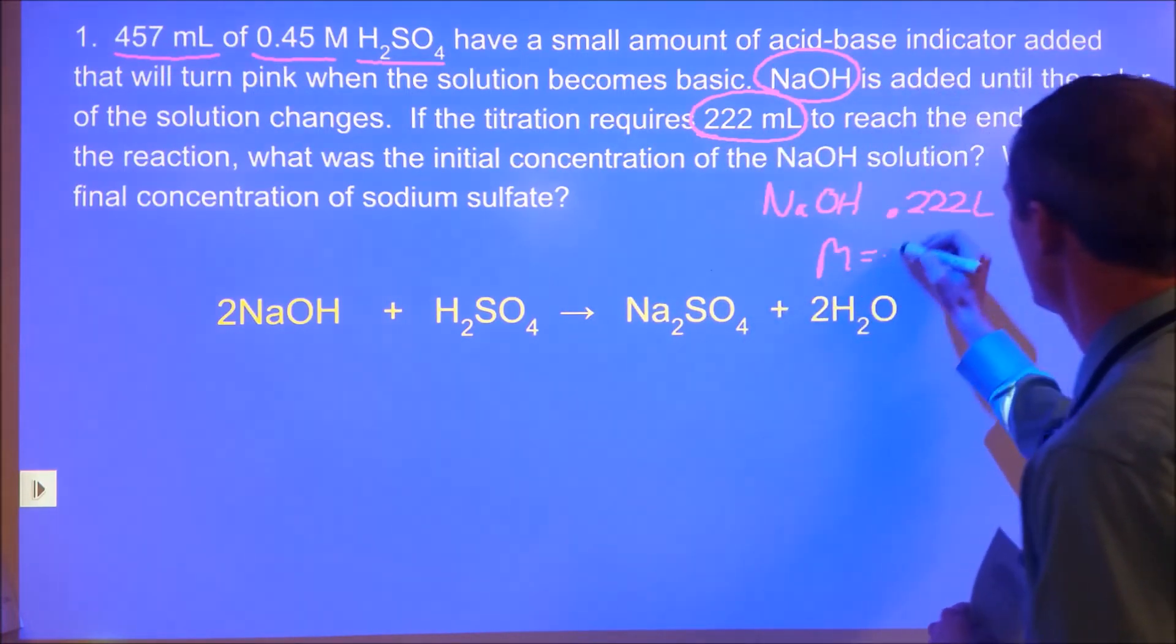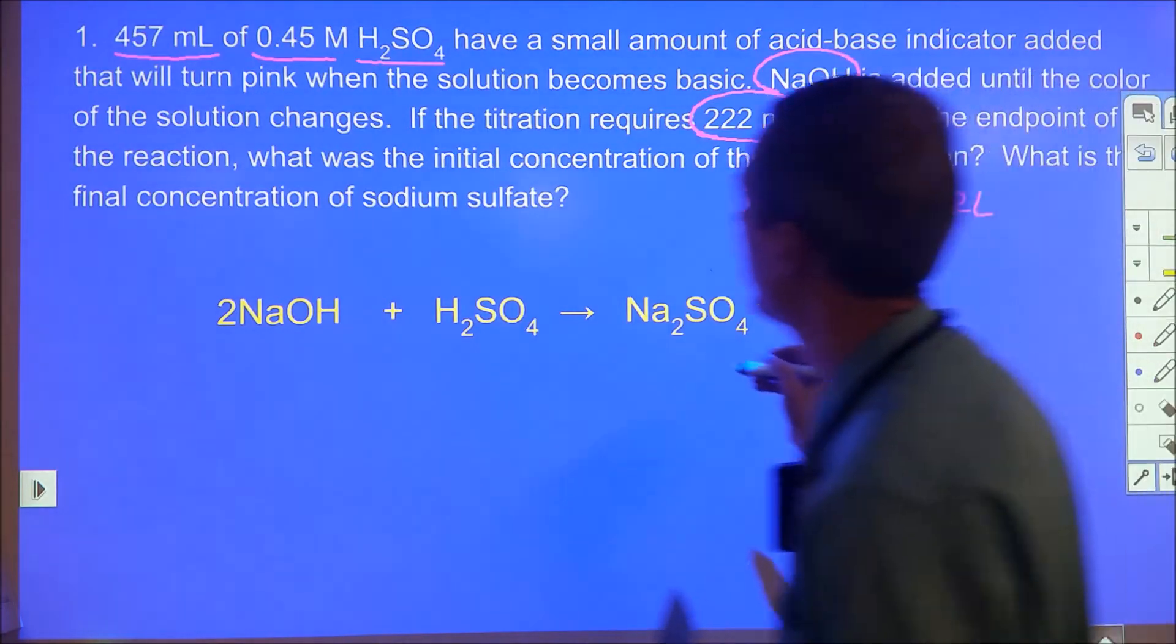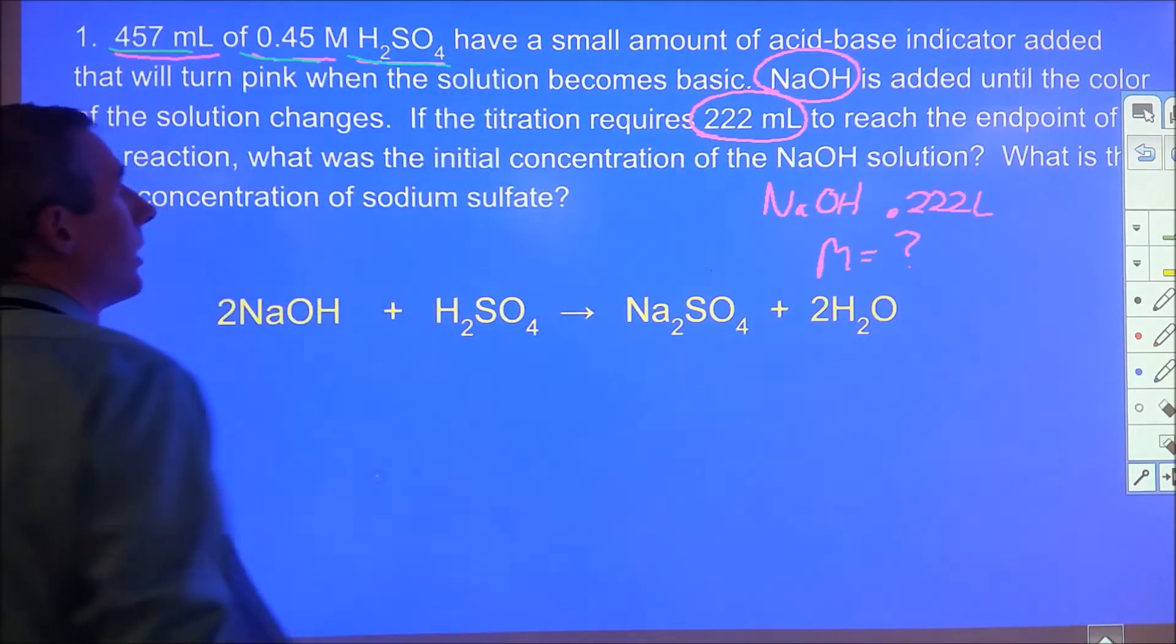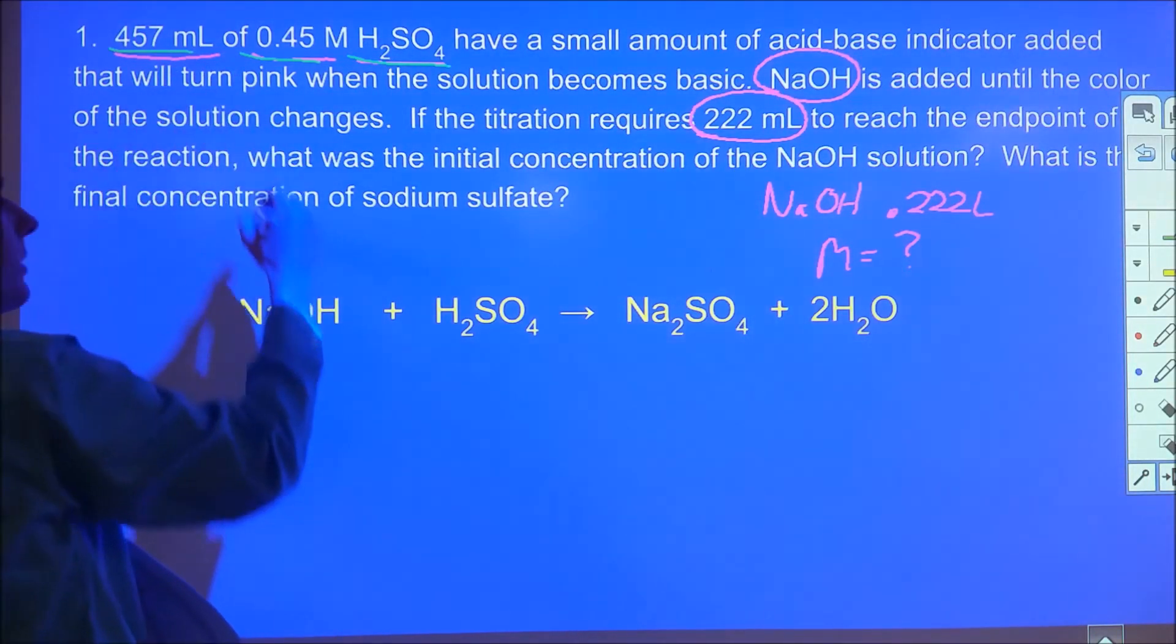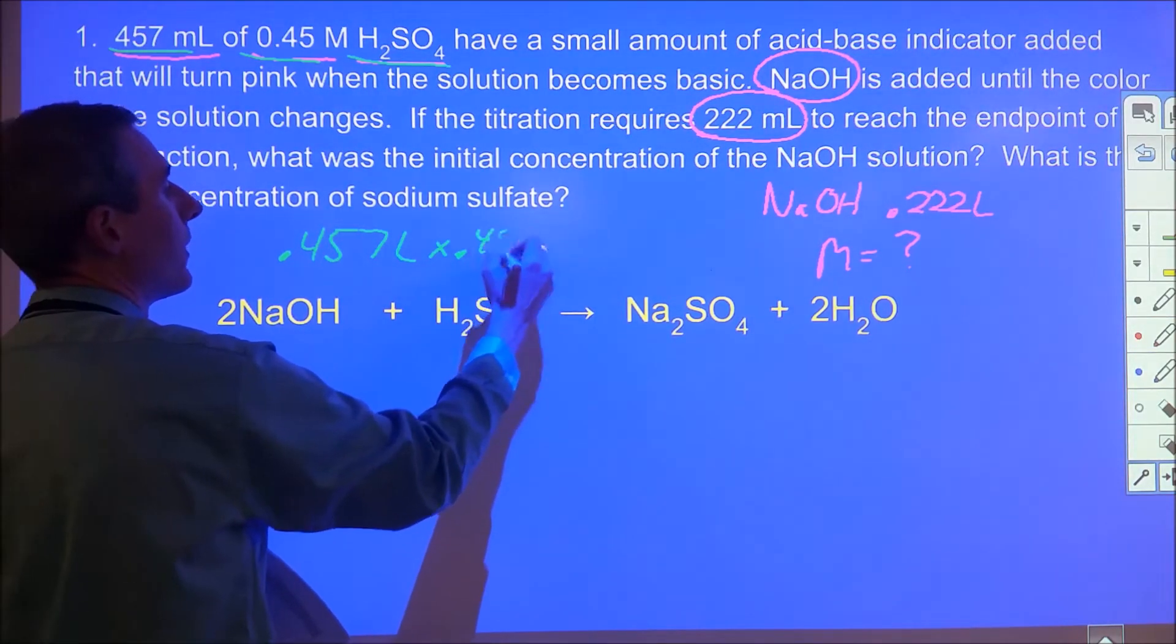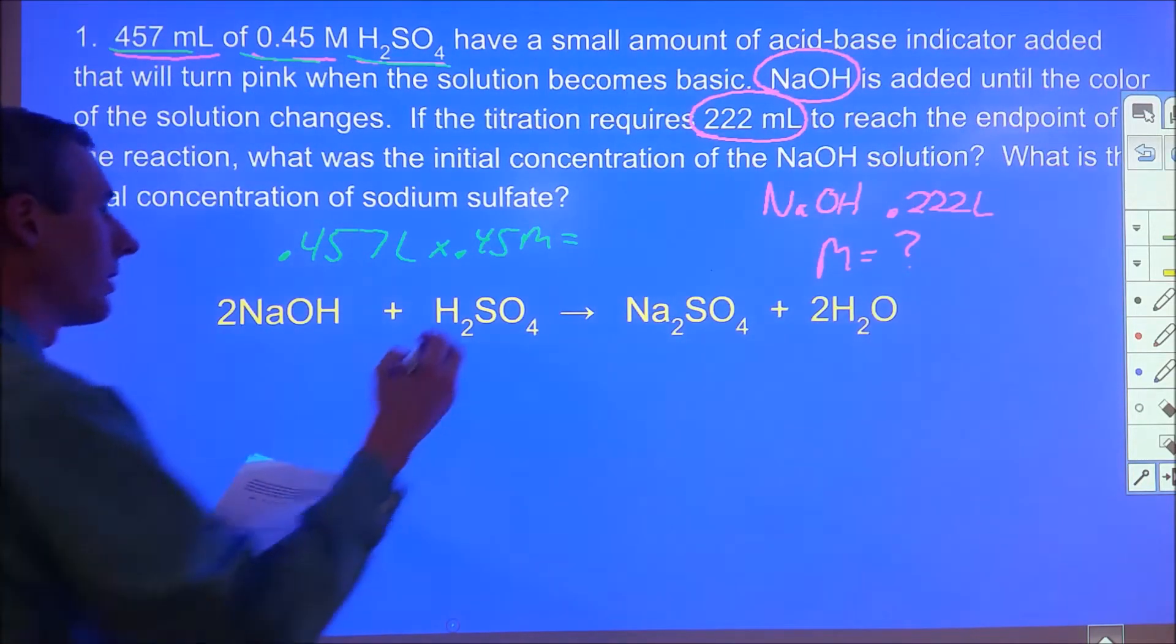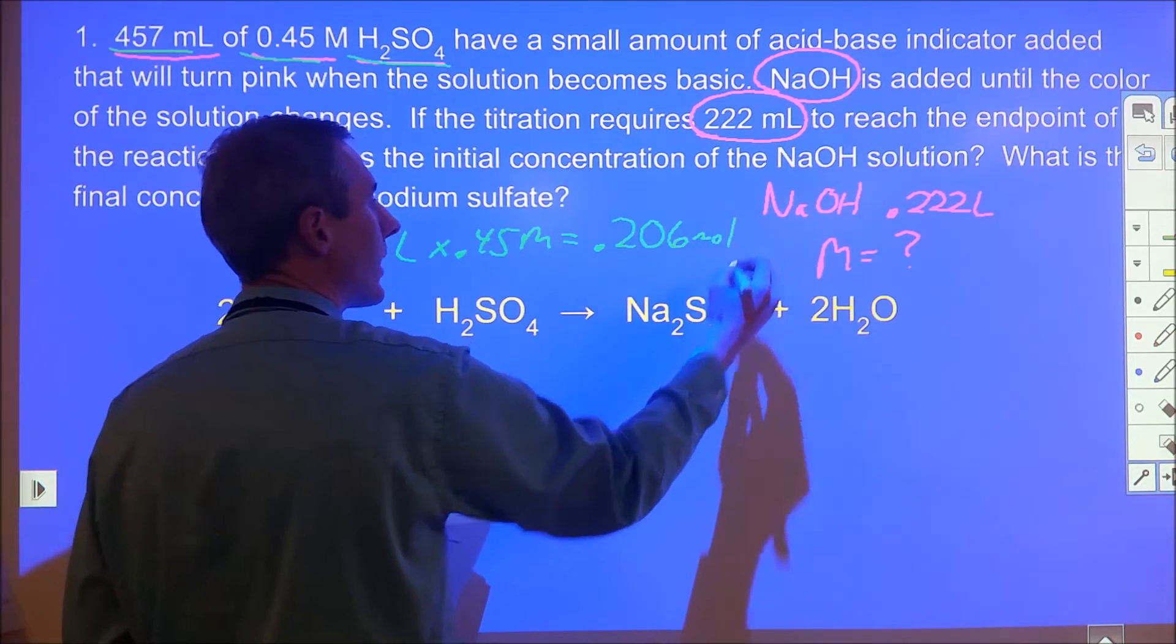Some things I know about sodium hydroxide is that I know it took 0.222 liters to complete the reaction. To figure out the concentration, I need to look at the volume, concentration, and stoichiometry of sulfuric acid. 457 milliliters is 0.457 liters times 0.45 molar, which comes out to 0.206 moles of sulfuric acid.